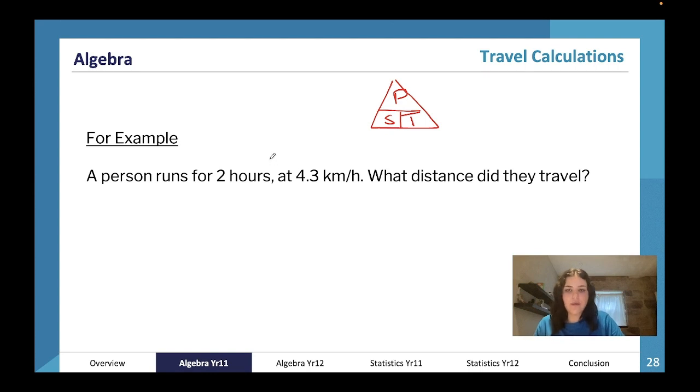Another example - let's draw a triangle. A person runs for two hours at 4.3 kilometers per hour - what distance did they travel? Distance is equal to speed times time. Two hours times 4.3 kilometers per hour, which is our distance, is going to give us 8.6 kilometers.